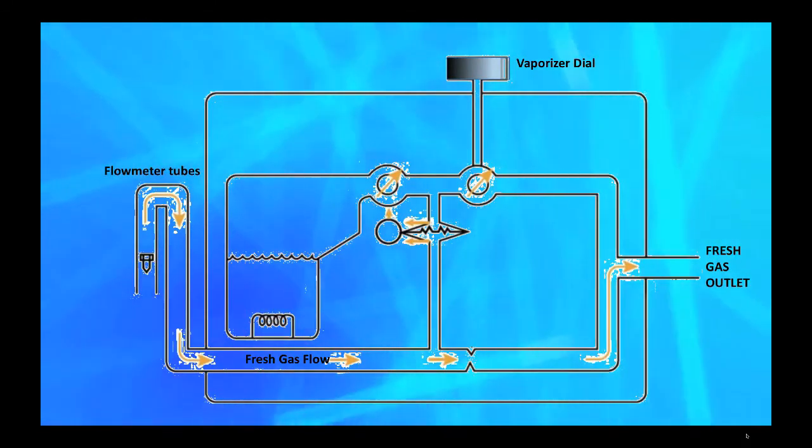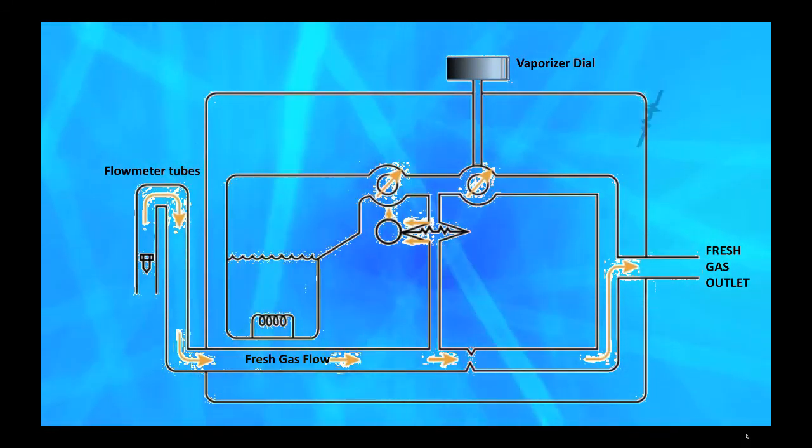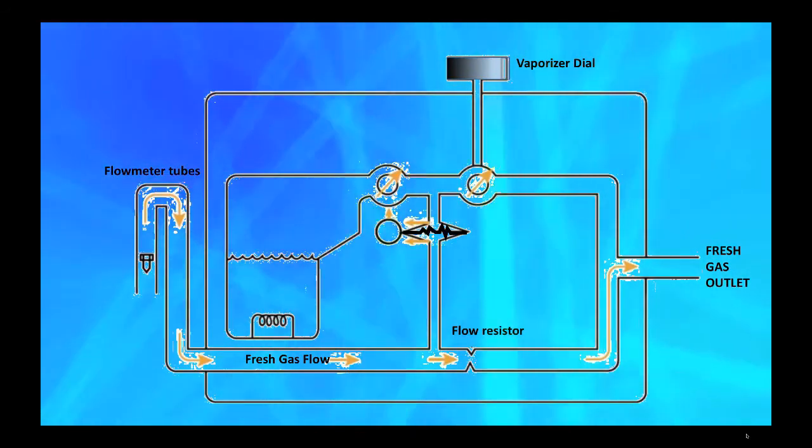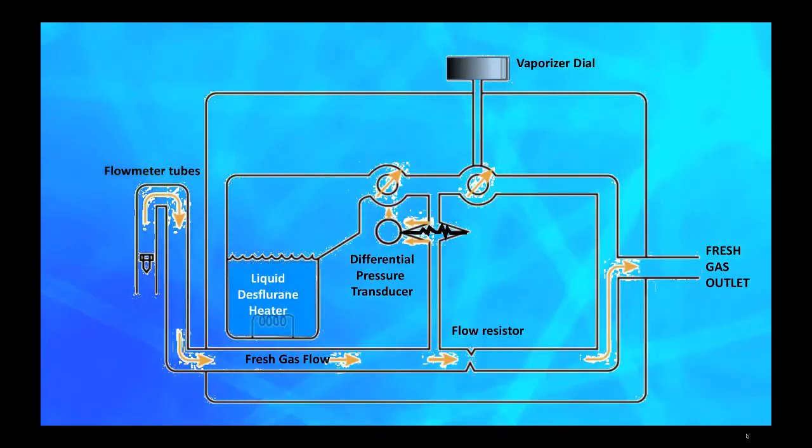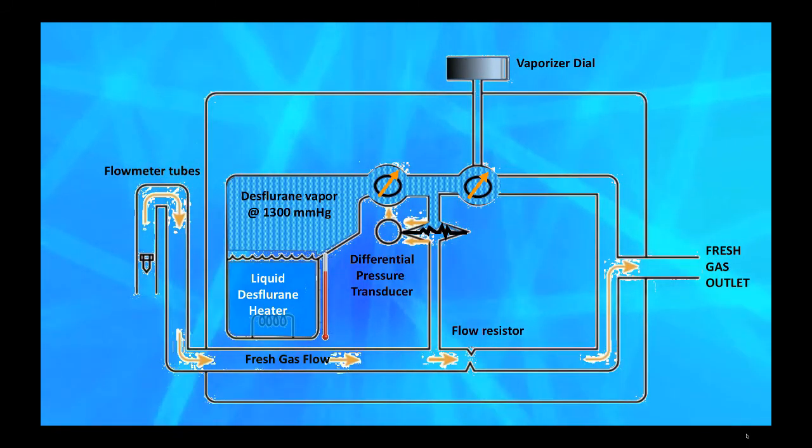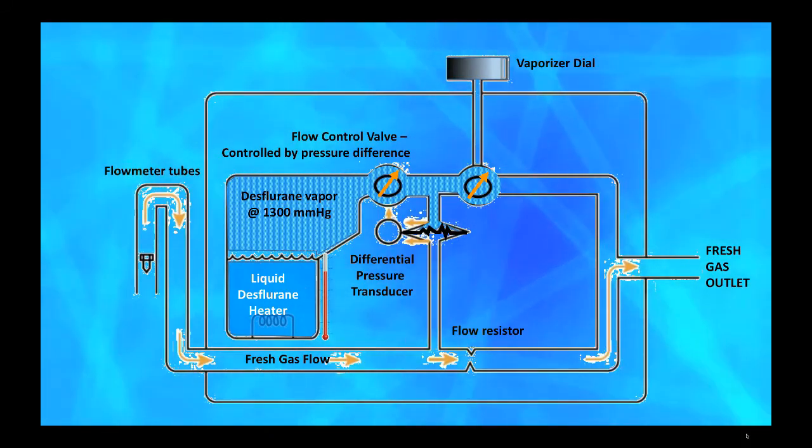Here's the diagram of the desflurane vaporizer. You can find the vaporizer dial and fresh gas outlet. This diaphragm in the pressure transducer separates the fresh gas flow from the vaporizing chamber. With the help of a flow resistor, it senses the amount of fresh gas flow through a differential pressure transducer. You can find the liquid desflurane heater, which is heating to 39 degrees to build vapor to 1300 millimeters of mercury, and which will be regulated through the initial flow control valve controlled by pressure transducer.